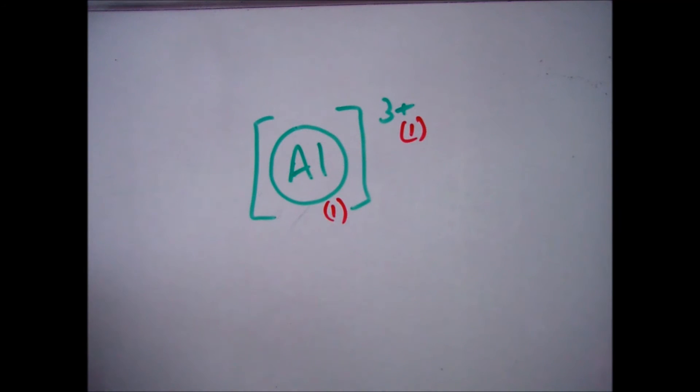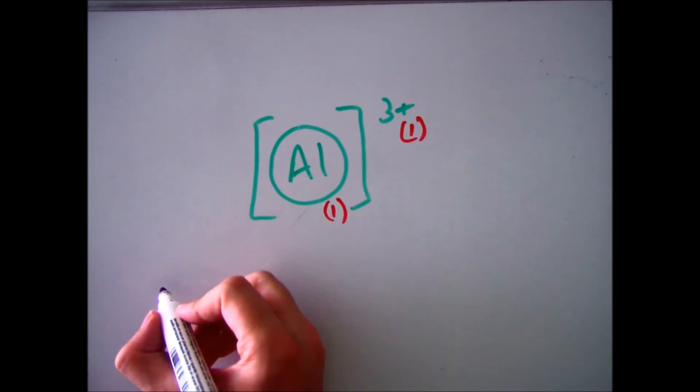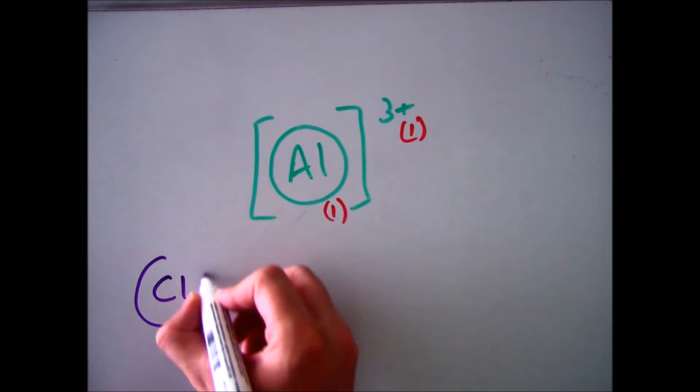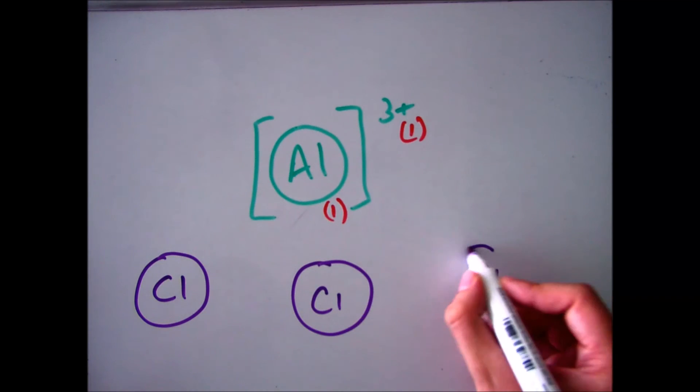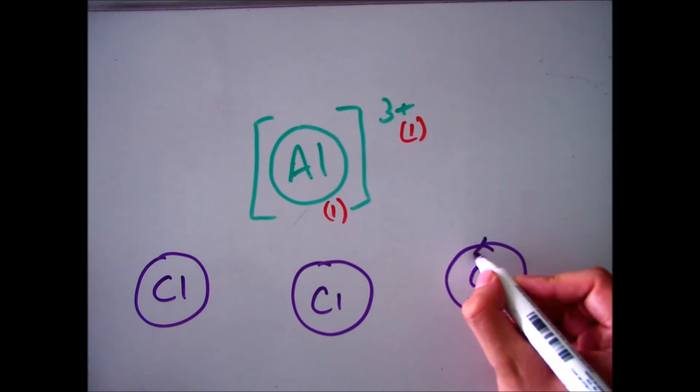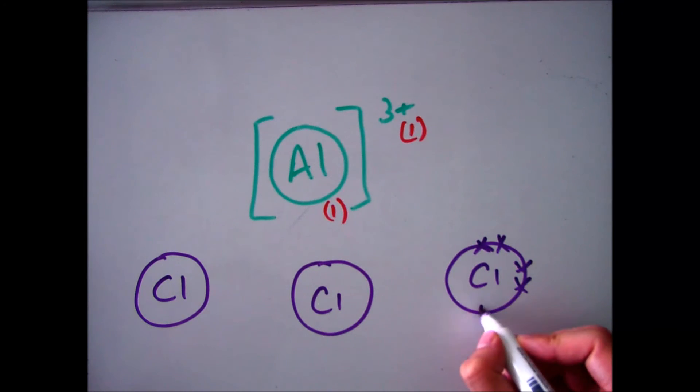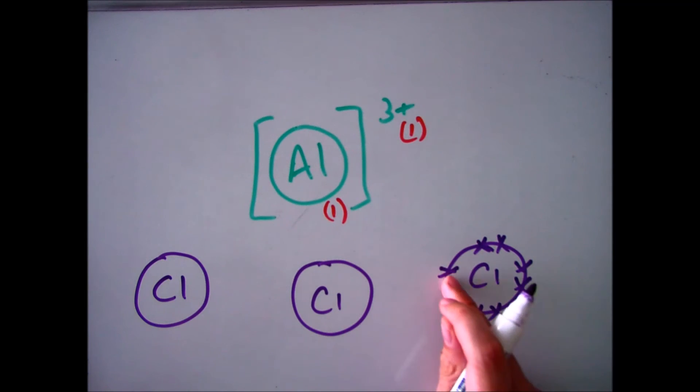The next thing, you know you have three chlorine atoms, so put those on. By the way, you've got one mark for saying aluminium is 3+, and one mark for drawing the aluminium without any electrons on. So let's draw the chlorine atoms. As you can see, I'm doing that here.